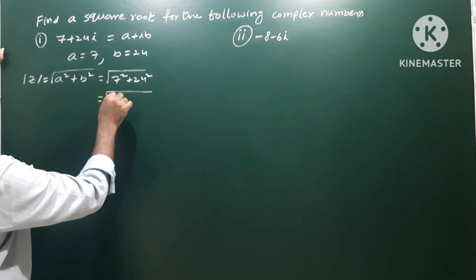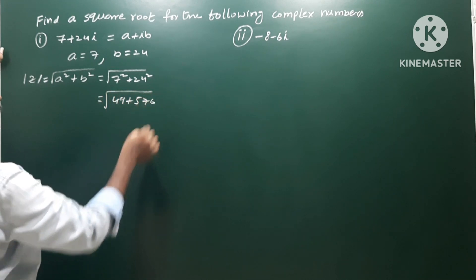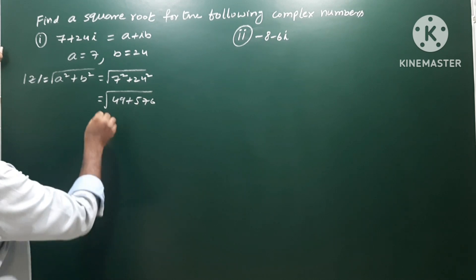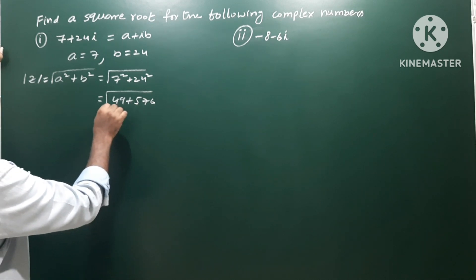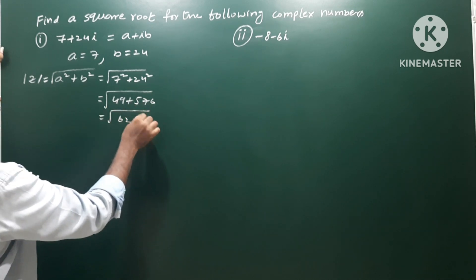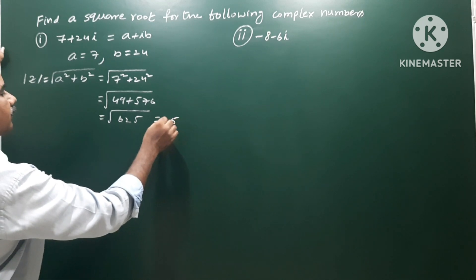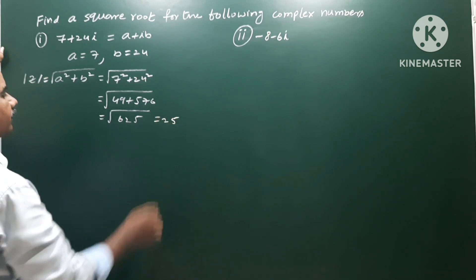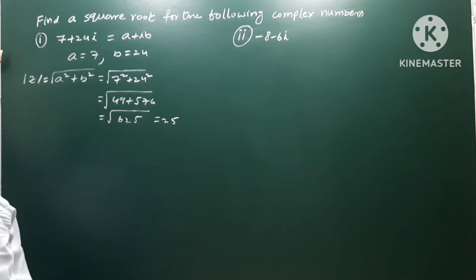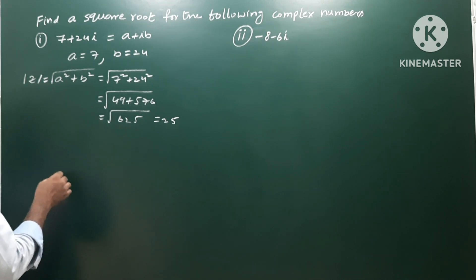So 49 plus 576, that gives root of 625. Root of 625 means 25. So mod z value is 25, which is root of a squared plus b squared.